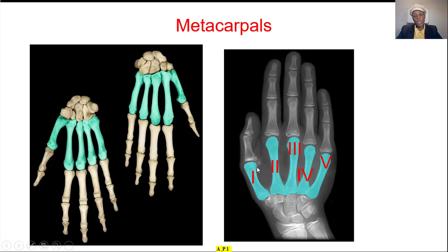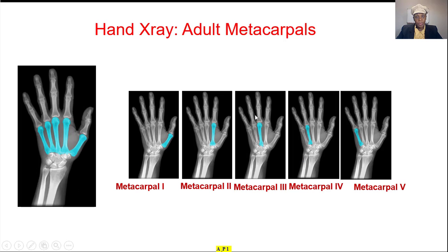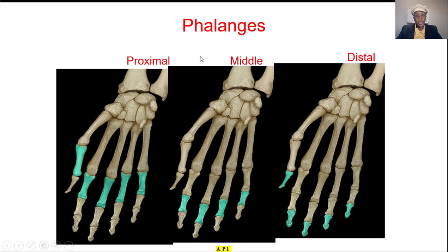The metacarpals: we have one, two, three, four, five — number one is the thumb. You see metacarpal one, two, three, four, five. Then the phalanges: we have proximal phalanges, middle phalanges, and distal phalanges.